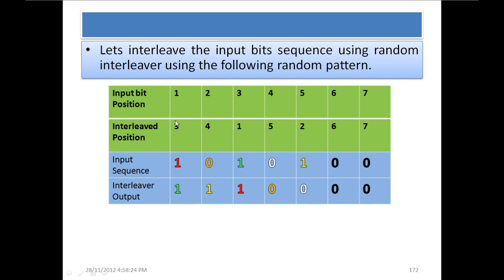Using this interleaver pattern, the bit at position 1 is placed at position 3, the bit at position 2 goes to position 4, position 3 goes to 1, position 4 goes to 5, position 5 goes to 2, and positions 6 and 7 remain as they are. This is the fixed pattern — whenever any bit comes in, it will be interleaved using the same pattern.